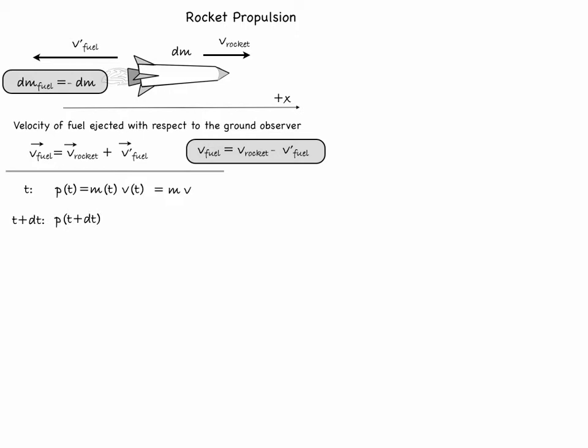A little bit later at t plus dt, the momentum at that time will be equal to the product of the mass and the velocity of the rocket plus the momentum of any fuel that was initially inside the rocket but now it has already been ejected, dm_fuel times v_fuel.